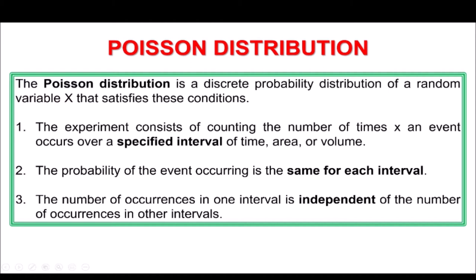Second, the probability of the event occurring is the same for each interval. And the third condition: the number of occurrences in one interval is independent of the number of occurrences in other intervals. So if an event occurs, it does not affect the probability of another event occurring, because they are independent of one another.